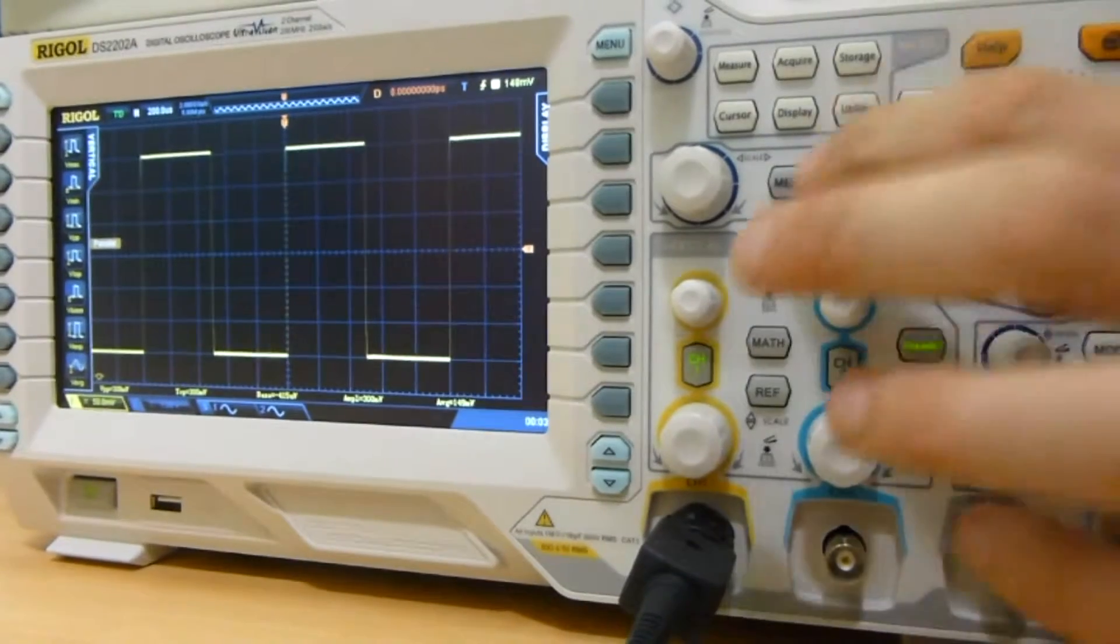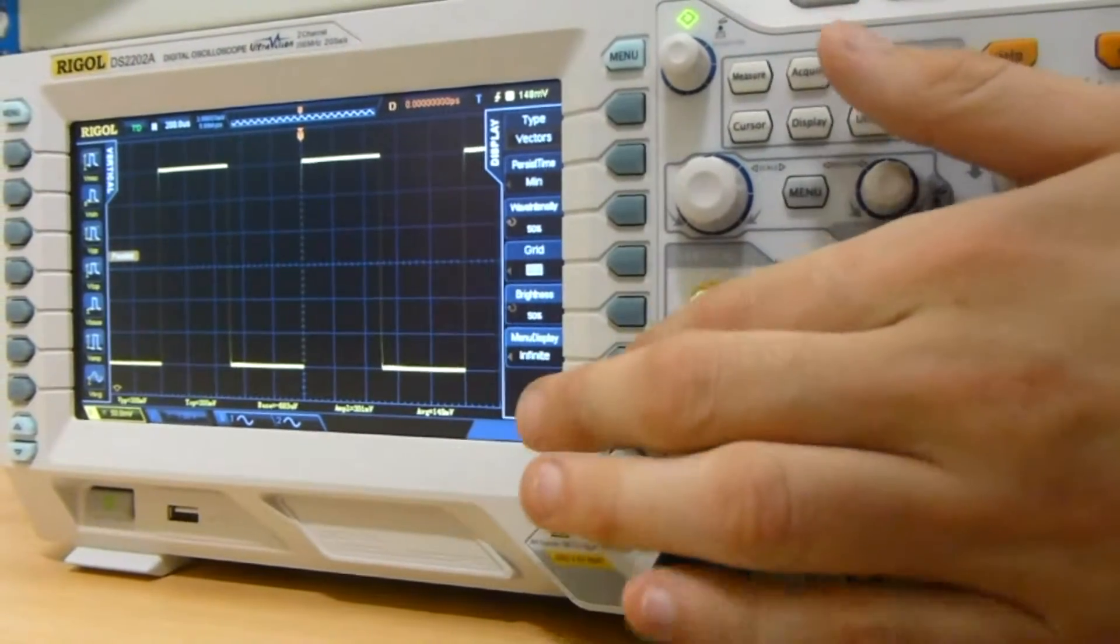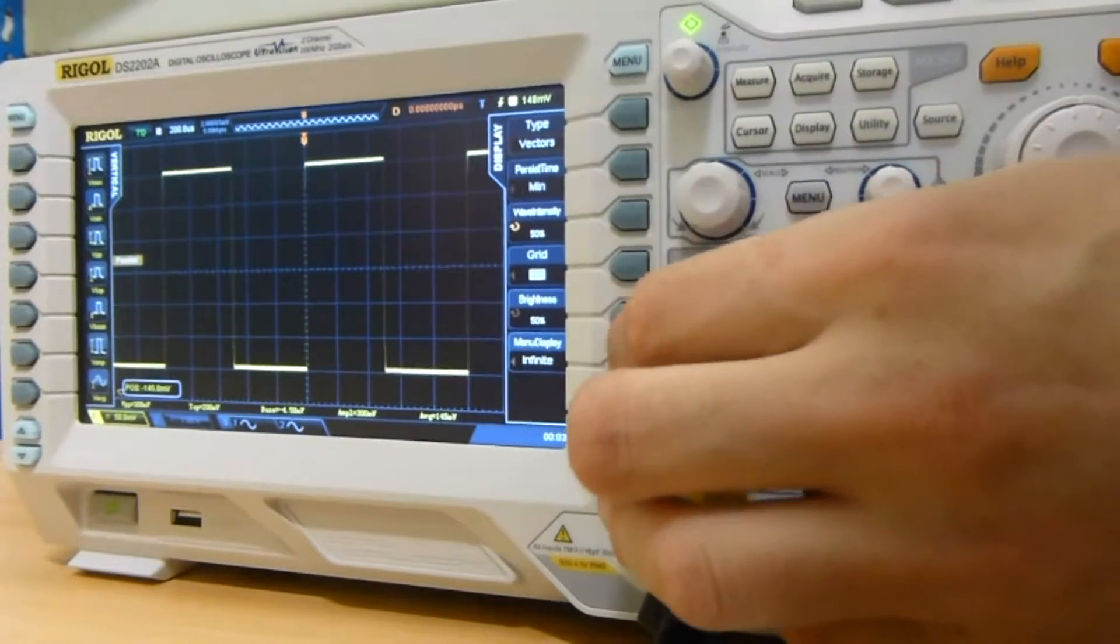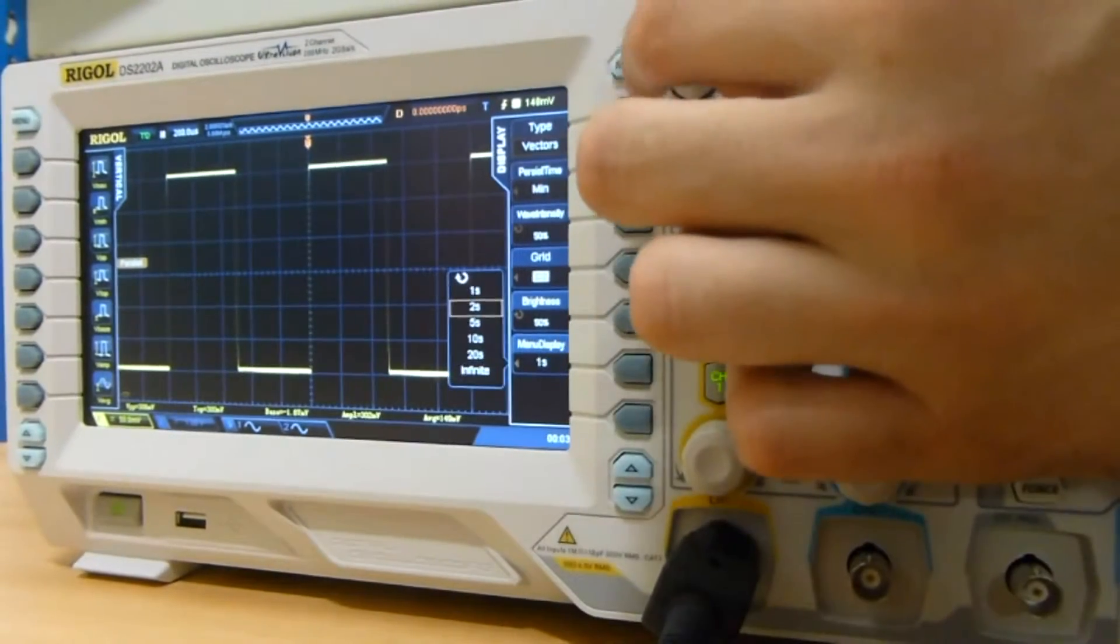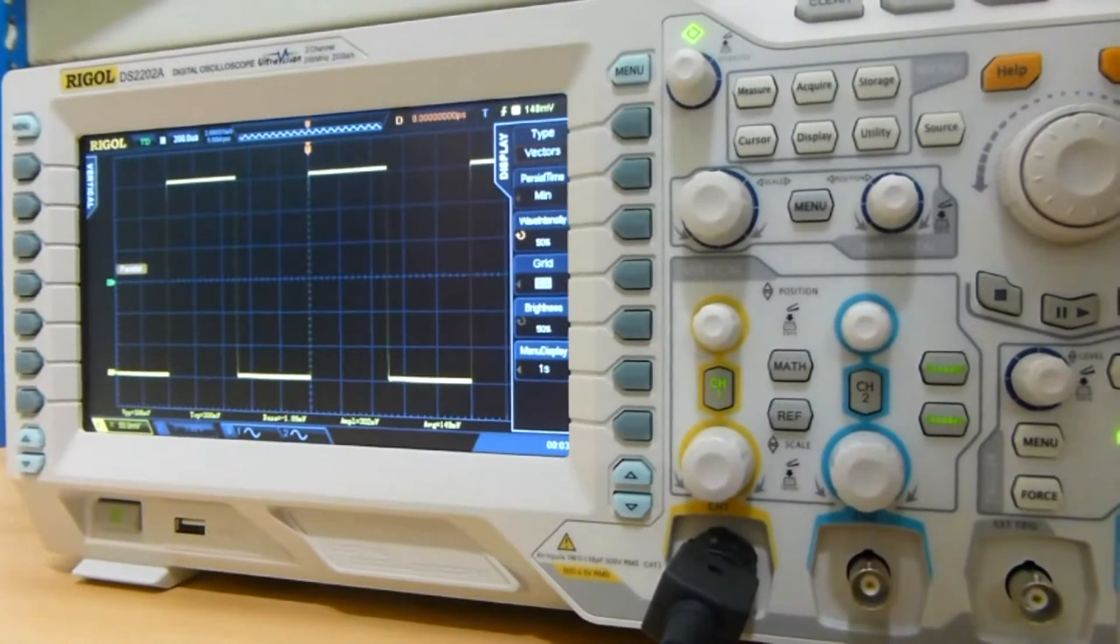So with the display menu, we can also set the amount of time that the menus display on the screen. That way you can see all of the trace all of the time.